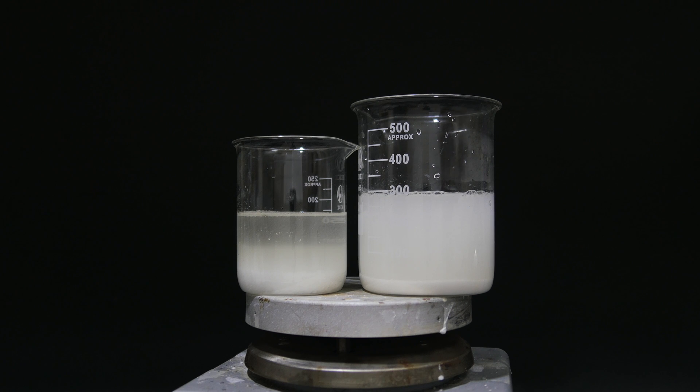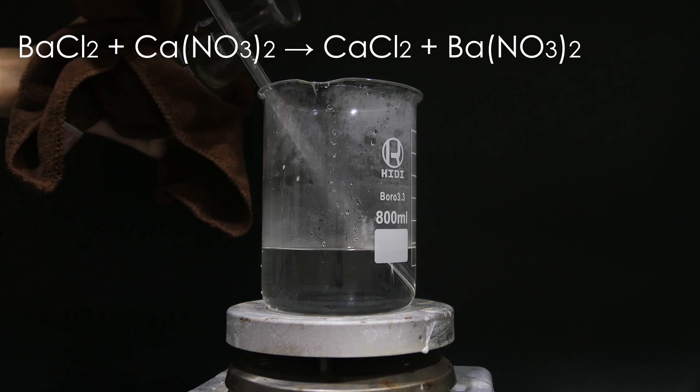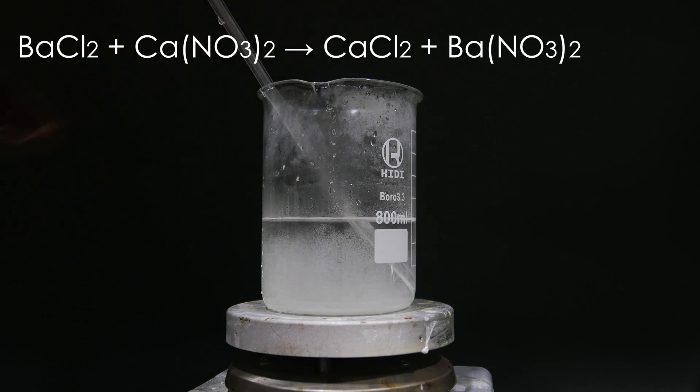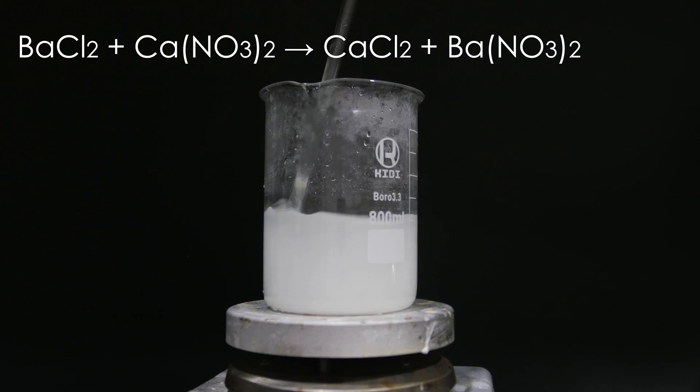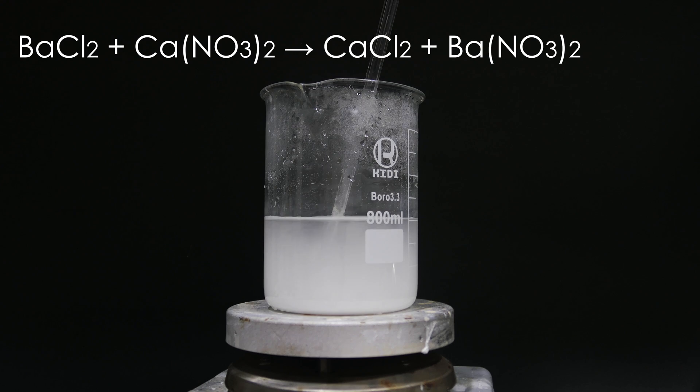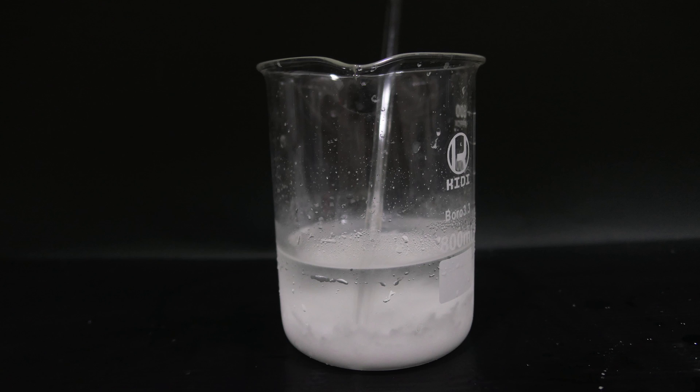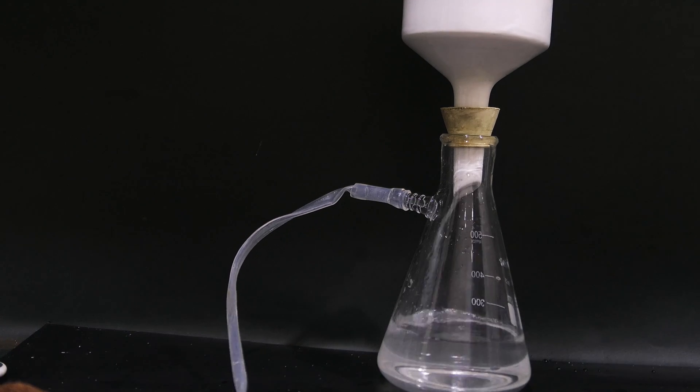Here, I dissolve one mole of calcium nitrate and one mole of barium chloride. Then after hot filtration, I mix the two solutions and allow it to cool. Then barium nitrate is filtered out. Yield is 45%, probably most of the product is still in solution.